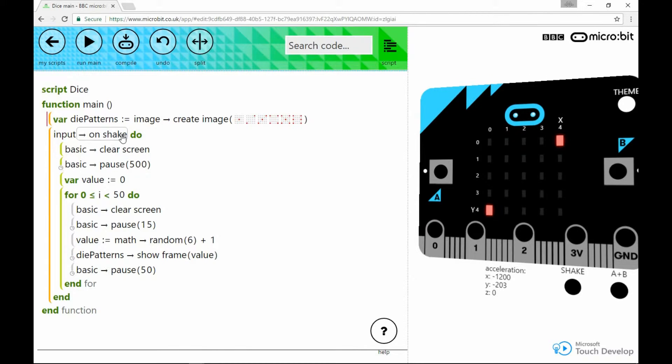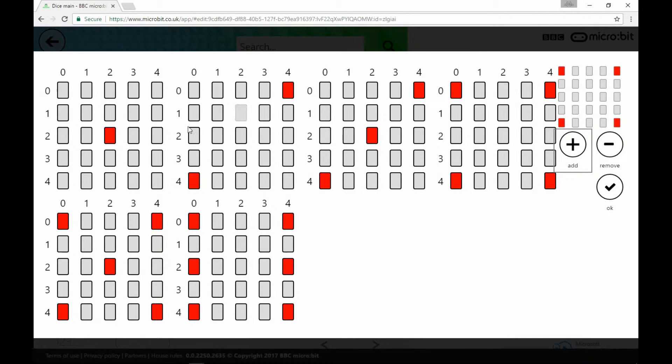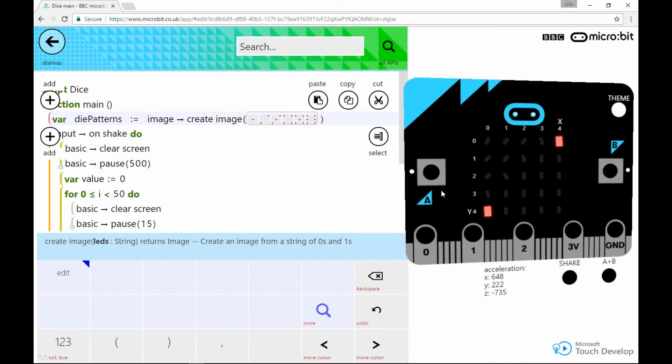And here we're setting up the graphics that are going to represent the faces of the dice. So this function here, create image, allows you to make a load of graphics that can be displayed on the screen. If I double-click on here, you can see I've got six different graphics here and they represent the different sides of the face. There's the one face, the two dots for the two face, and so on. You can put all of these in one graphic which here is called die patterns.